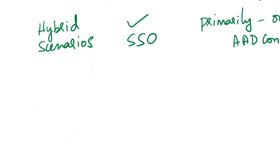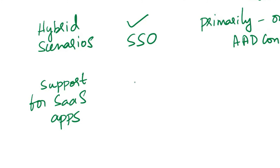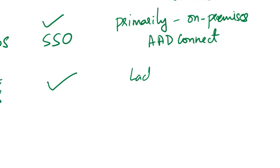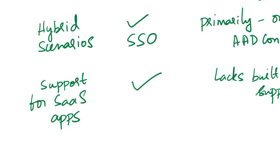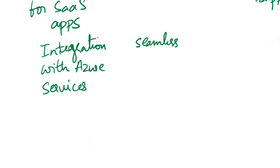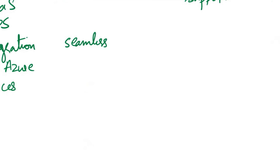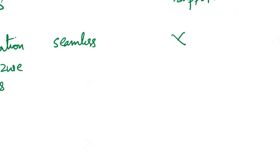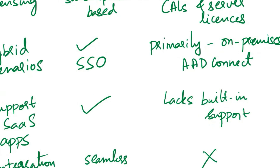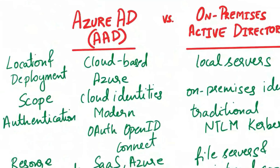The next aspects of comparison are support for SaaS applications and integration with Azure services. Azure AD provides support for managing access to a wide range of third-party SaaS applications and integrates seamlessly with various Azure services and resources. On-premises Active Directory lacks built-in support for SaaS applications and is not integrated with Azure services by default, although integration can be configured. These are the key differences between Azure AD and on-premises Active Directory.